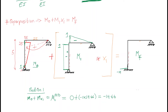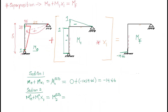For section two: M0 equals positive 25. M1 at section two — just as a reminder, section two is here — for M1 we have negative one, times x1 which is 14.66. So this gives us 25 minus 14.66 equals 10.34 kN·m. At section two we have positive 10.34 kN·m, which is on the inside.